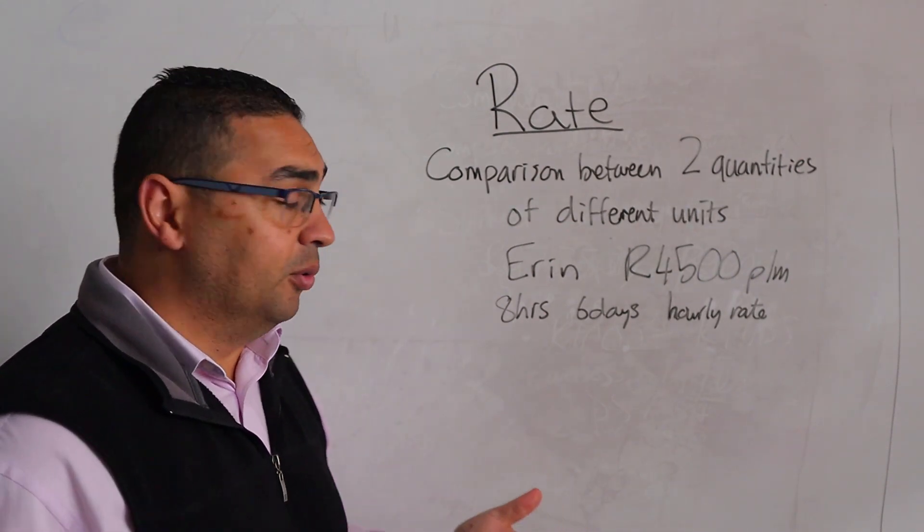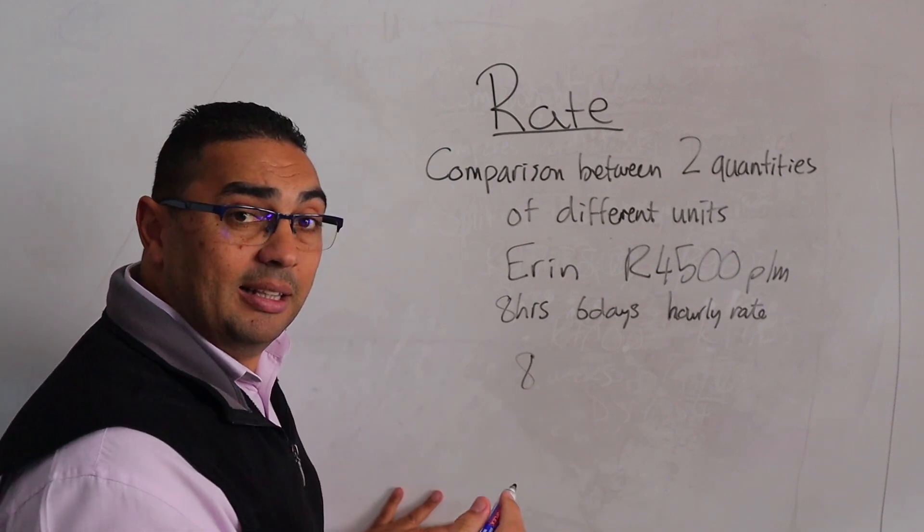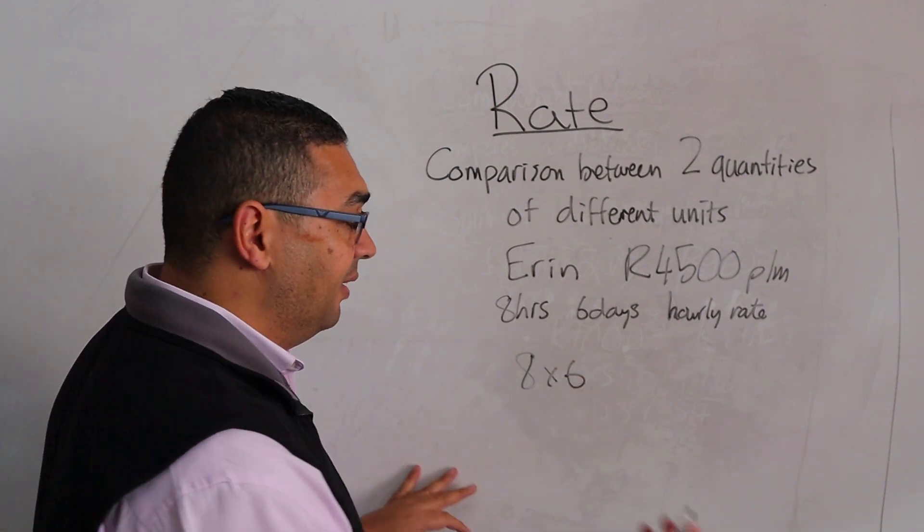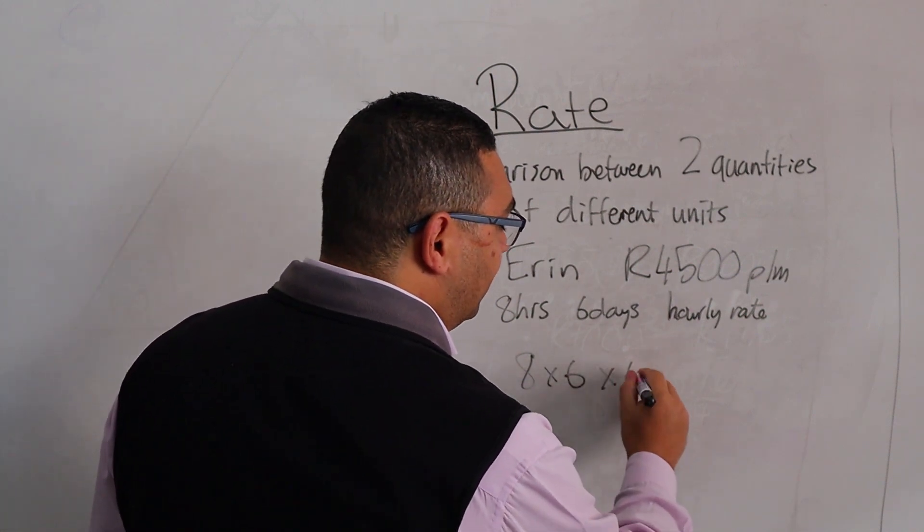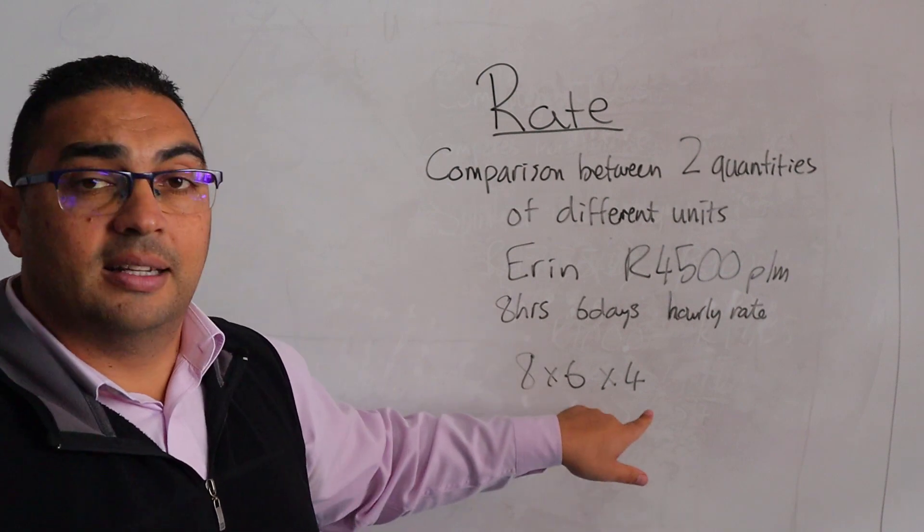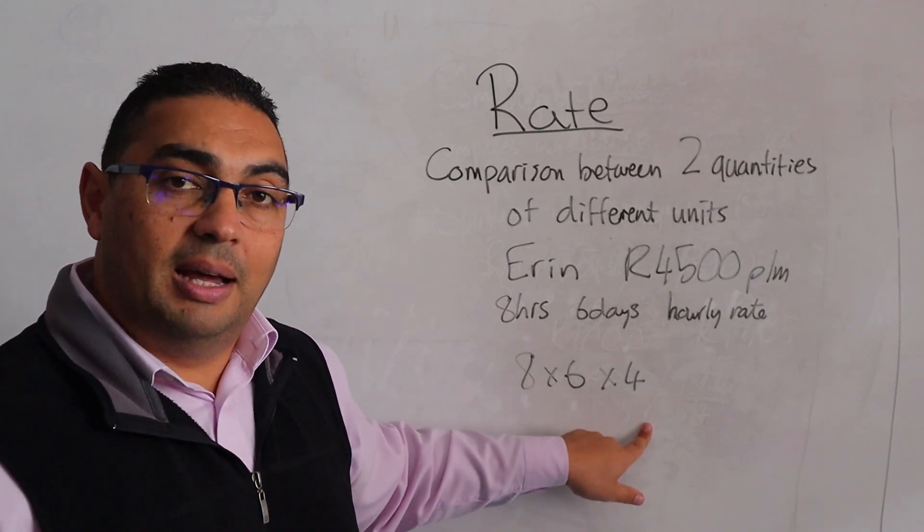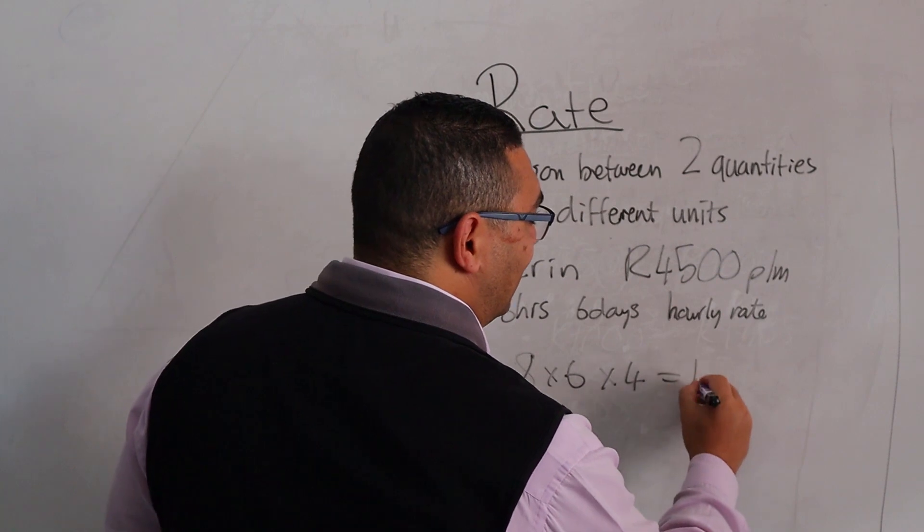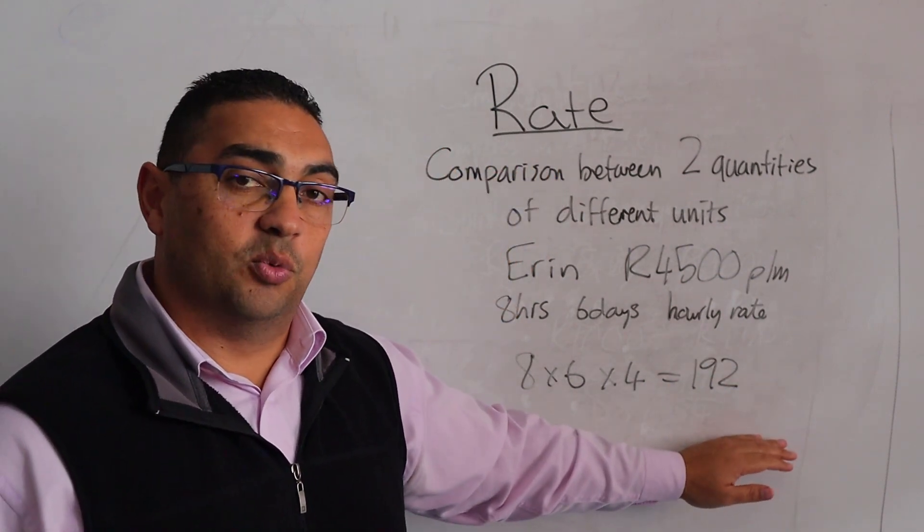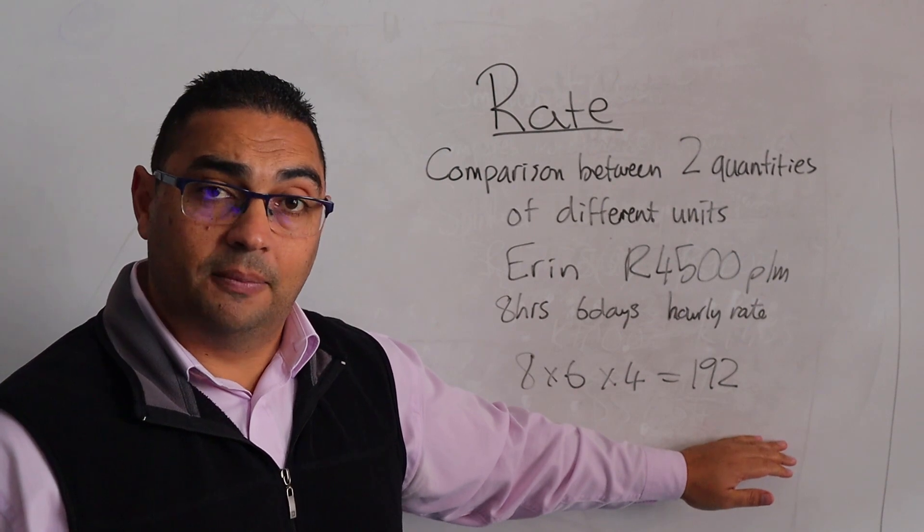All we really need to do is take our eight hours, multiply that by the number of days, and whatever that answer is, we're going to multiply by four - the hours, days, and weeks in a month. That should give us around 192 hours that she's working every single month.